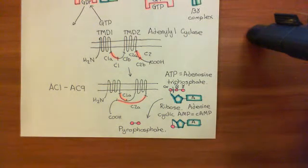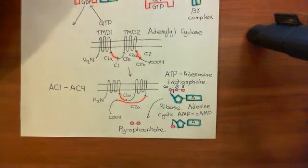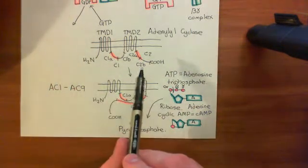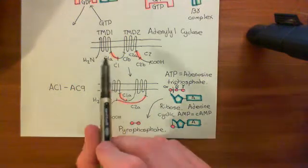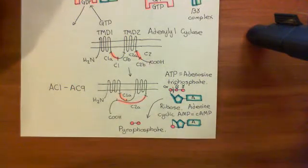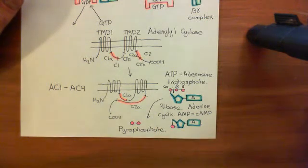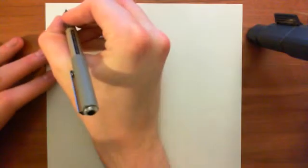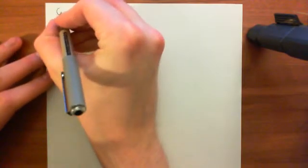We're discussing the alpha-I GTP subunit and its effects on adenylyl cyclase enzymes. We've discussed the structure of adenylyl cyclase enzymes and how they're activated by the dimerization of the C1A and C2A domains. We're now discussing the nine different forms of adenylyl cyclase enzymes and how they are categorized. Adenylyl cyclases are grouped into four different groups.